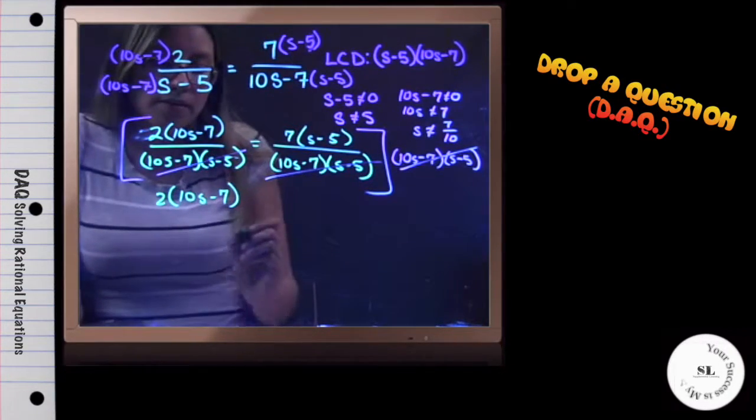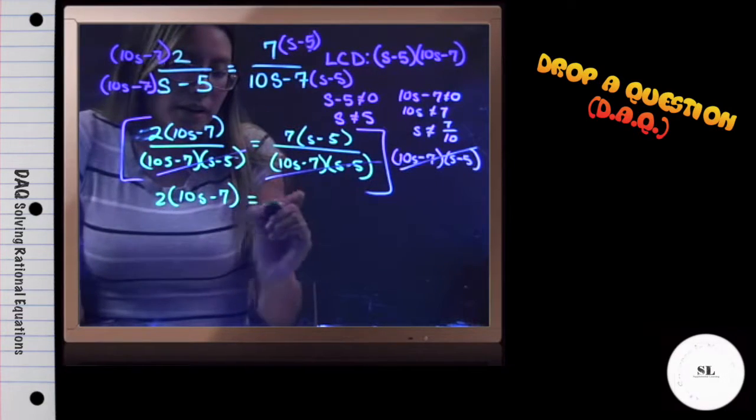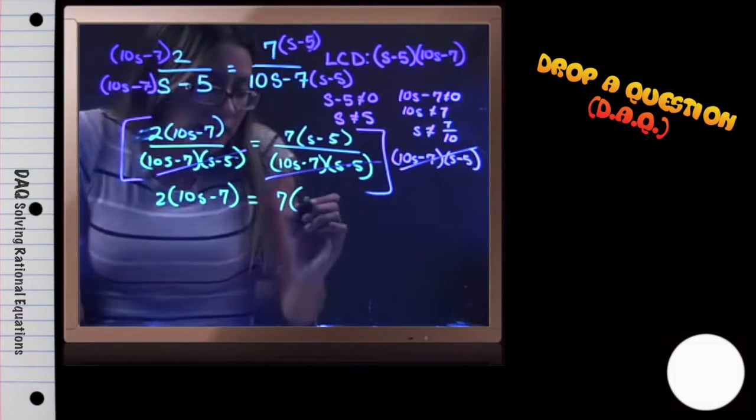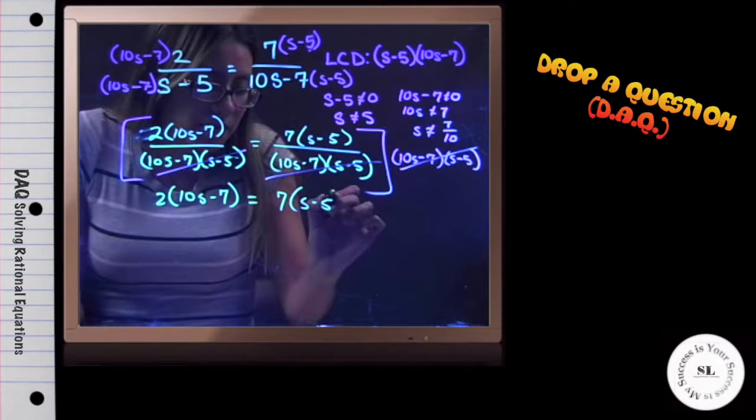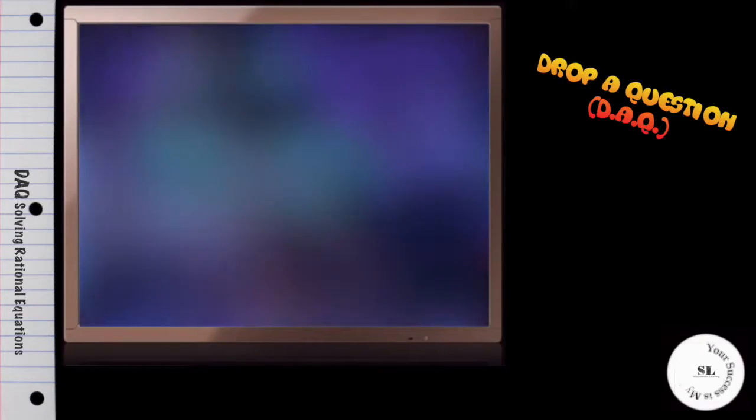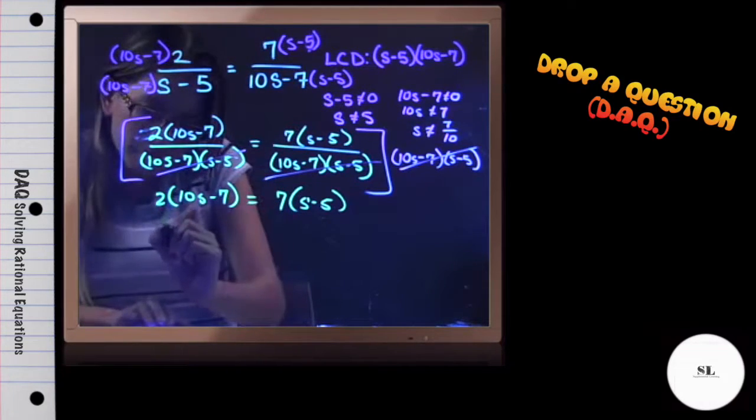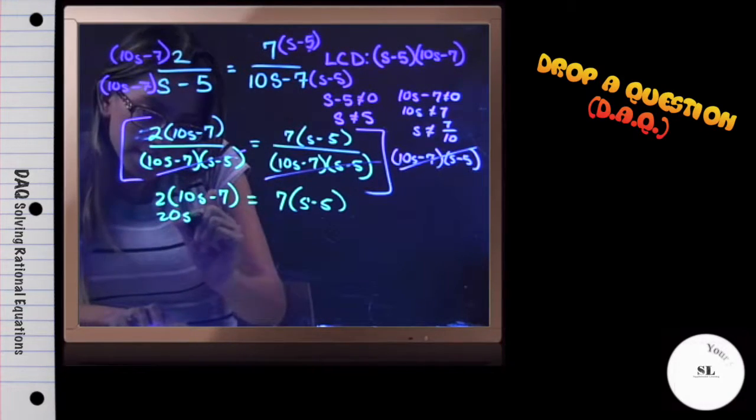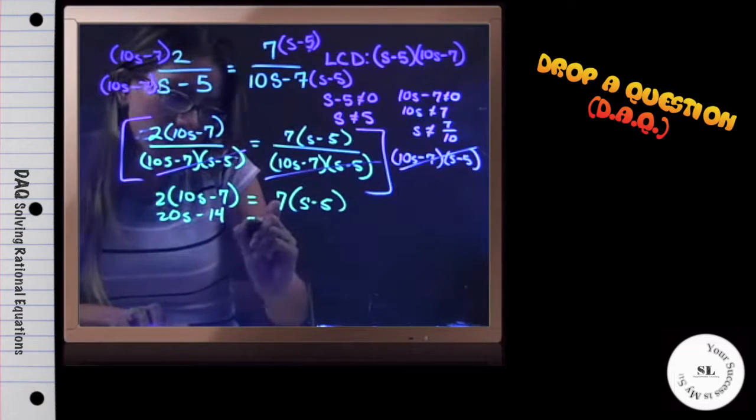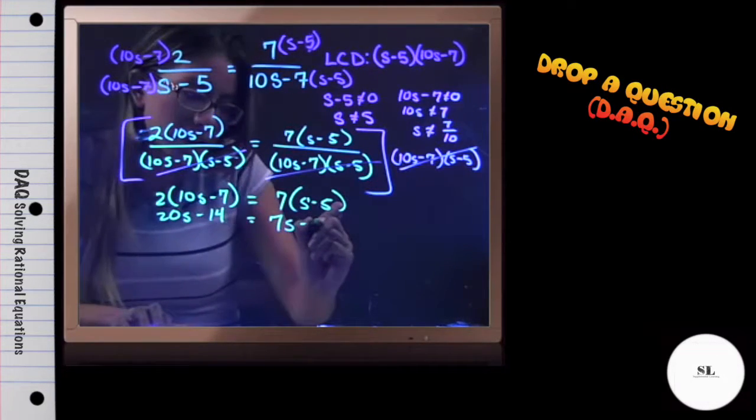And now all that is left is my numerators equaling each other. 10s minus 7 multiplied by 2 equals 7 times s minus 5. So now that we have this equation, we can distribute both sides. We will have 20s minus 14 equaling 7s minus 35.